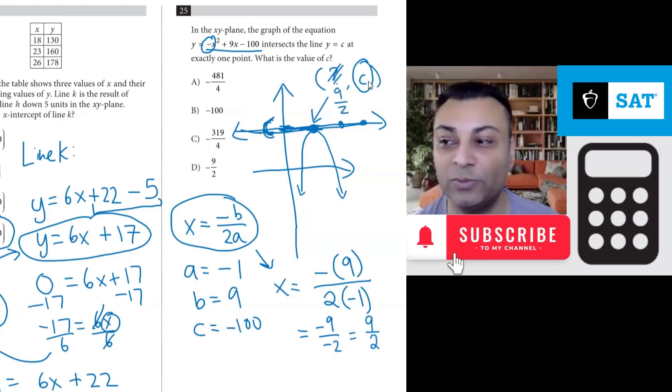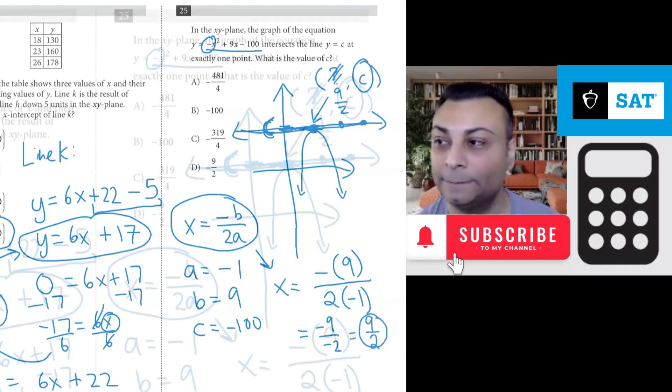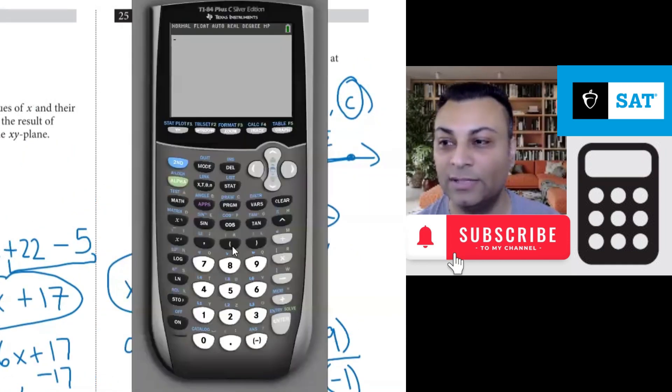We need the y coordinate which is what happens when you plug in 9 halves into the original equation. So for that let's get the calculator out. So we have negative x squared but x is 9 over 2. So let's go ahead and put that in 9 over 2 squared plus 9x and again x is 9 over 2. So you have 9 over 2 minus 100. Negative x squared plus 9x minus 100 where the x coordinate we will be using is 9 halves. 9 over 2.